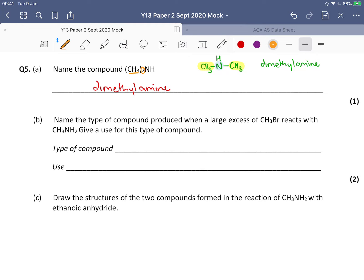So, name the type of compound produced when a large excess - that's very important, large excess - of CH₃Br, and CH₃Br is a halogenoalkane, reacts with our amine, and give a use of this type of compound. So the large excess is important.